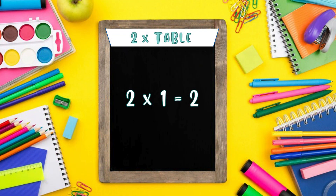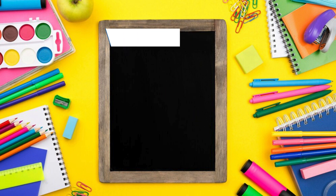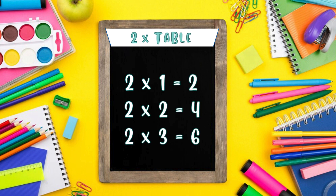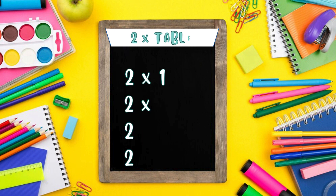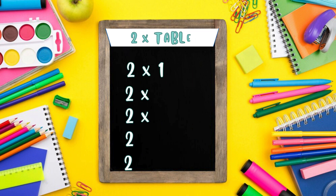Two times one is two. Two times two is four. Two times three is six. Two times four is eight. Two times five is ten.